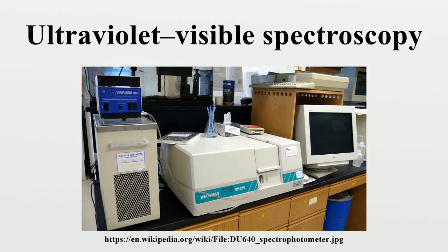Both CCDs and photodiode arrays consist of many detectors grouped into one- or two-dimensional arrays, and are able to collect light of different wavelengths on different pixels or groups of pixels simultaneously. A spectrophotometer can be either single beam or double beam. In a single-beam instrument, all of the light passes through the sample cell and must be measured by removing the sample — the earliest design, still in common use in both teaching and industrial labs. In a double-beam instrument, the light is split into two beams before it reaches the sample: one beam is used as the reference, and the other beam passes through the sample. The reference beam intensity is taken as 100% transmission, and the measurement displayed is the ratio of the two beam intensities.